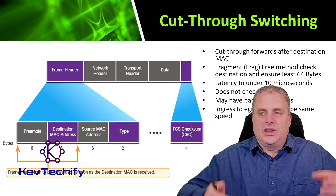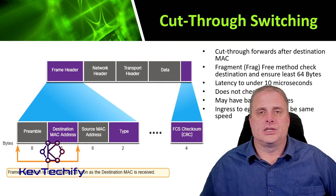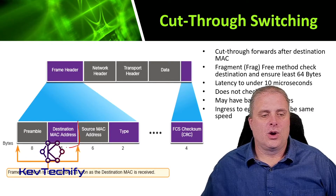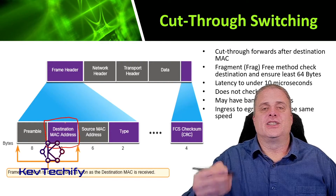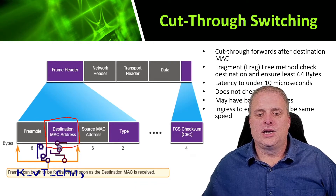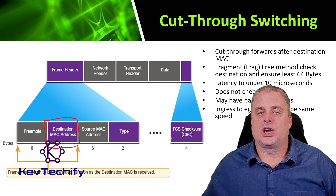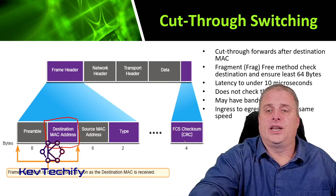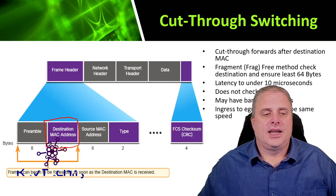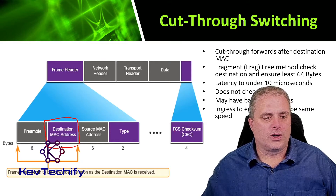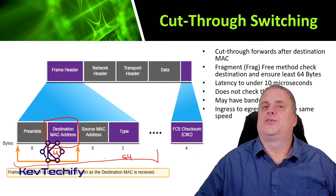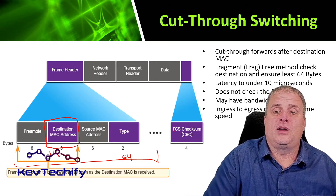The second method is cut-through, which is really quick. Once the frame starts coming in, after the 8-byte preamble we have the destination MAC address — and as soon as that destination MAC address comes in, the switch starts forwarding right away. It doesn't wait to load in all the remaining fields, the data, or the frame check sequence checksum field. There is a special cut-through variant called fragment-free, or frag-free, which loads the first 64 bytes before forwarding. Usually errors happen in the first 64 bytes, so it's quicker and we don't have to store the entire frame.